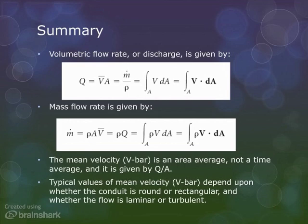The mean velocity, V bar, is an area average, not a time average, and it's given by Q over area. Typical values of mean velocity depend upon whether the conduit is round or rectangular and whether the flow is laminar or turbulent.